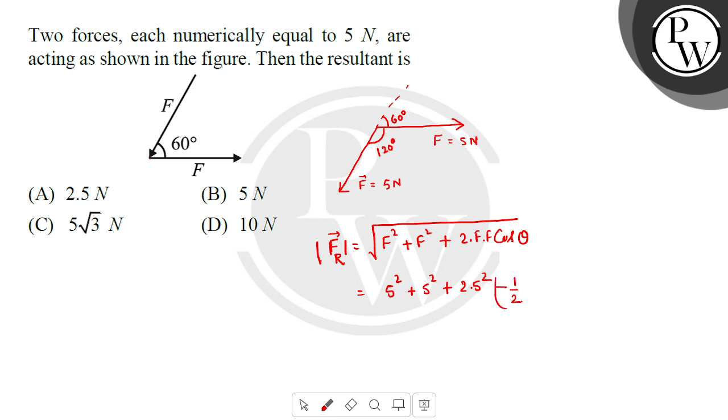So this will be 5 only. So the magnitude of the resultant is 5, that is your option number B. So I hope all of you got the answer. Thank you.